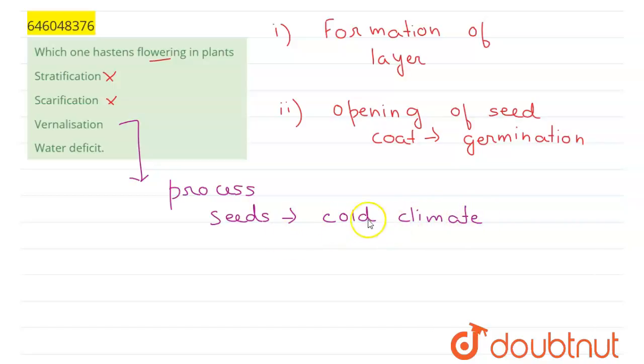So here the cold climate is used to hasten the flowering, and this process of keeping the seeds in extreme cold climate which helps in the dormancy of the seed is known as vernalization. So this one is the right answer here. Vernalization hastens flowering in plants. And lastly, water deficit, that is deficiency of water.